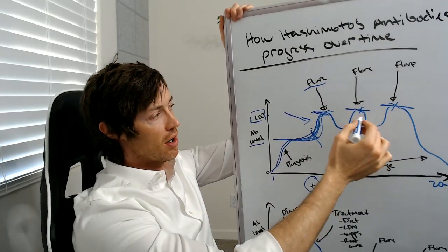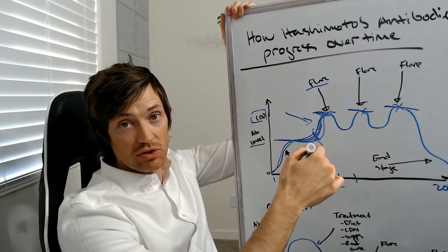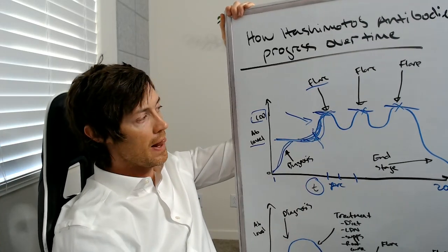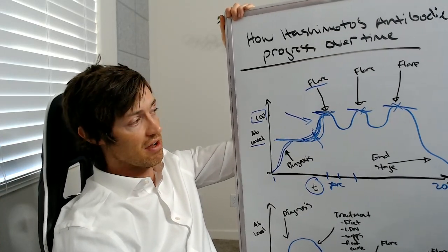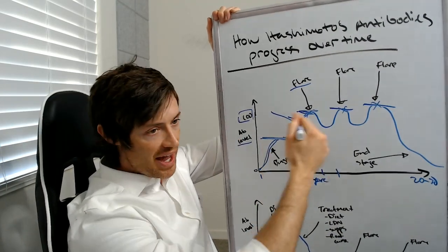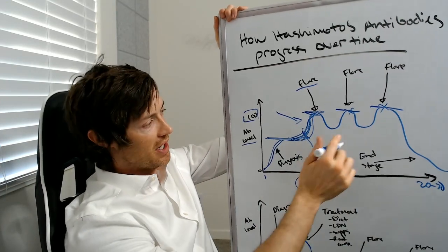So generally as these antibodies flare up for any reason, you will not only feel worse, you'll have more symptoms, but you will also have more destruction of the thyroid gland. That's why you do not want these flares to occur. And again, I've only illustrated three here, but anytime your antibody levels peak beyond which is normal, that indicates that you're in a flare.